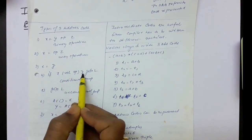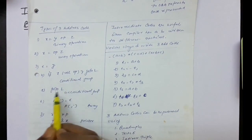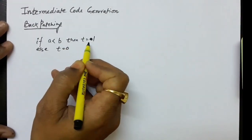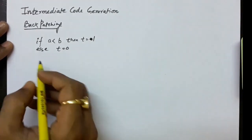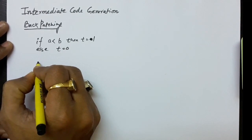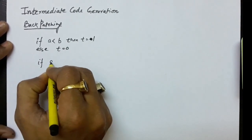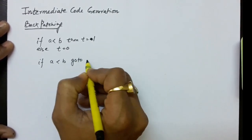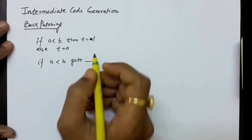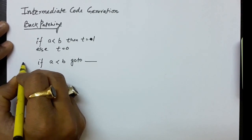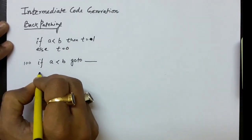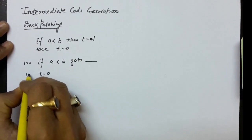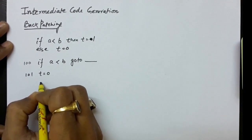We will be most concerned with the conditional jump: if x relational-operator y goto L, and the unconditional jump: goto L. So for the statement if a is less than b then t equals 1, else t equals 0, we first write: if a relop b goto (label blank — not yet defined). Let's say this label is 100, and then we write the else part: t equals 0.